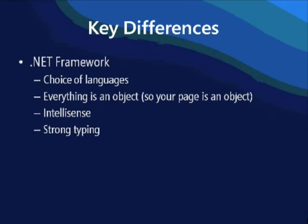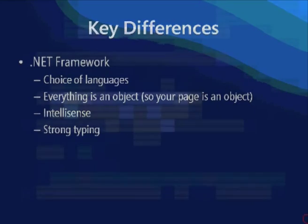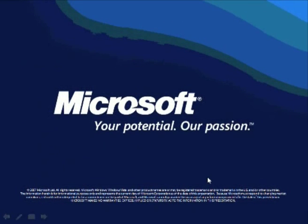In the .NET world, things are strongly typed. If you decide something is an integer at the outset, then it will always be an integer. You can convert objects between types, but for their lifetime they remain of the same type and can only store that type of object. With that, I want to say thank you very much for listening to me.